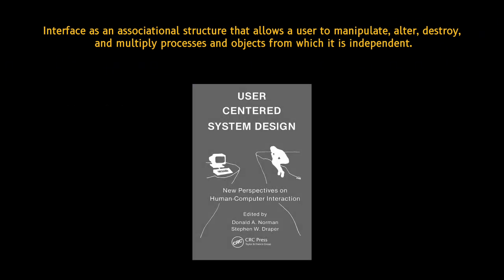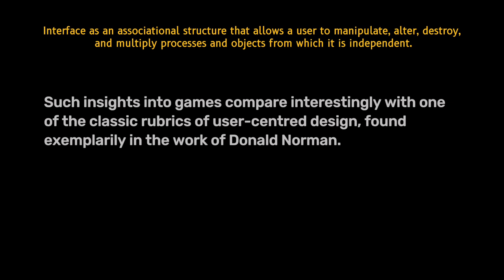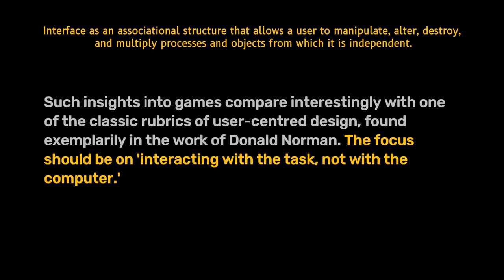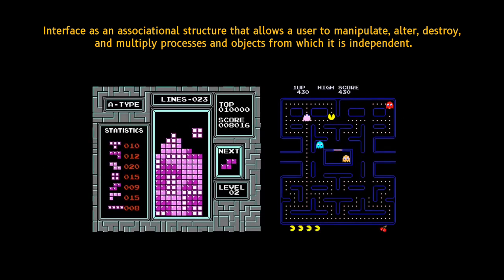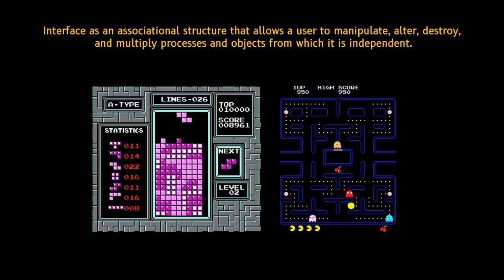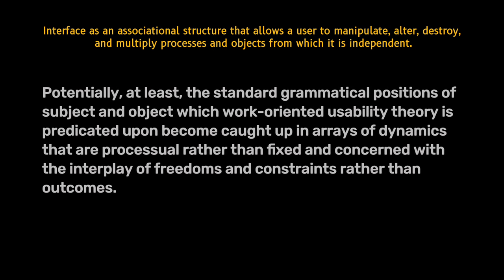Comparing this to user-centered design as exemplified by Don Norman, we see a contrast. Such insights into games compare interestingly with one of the classic rubrics of user-centered design: the focus should be on interacting with the task, not with the computer. In a video game, the task is precisely to perform the interaction with the computer, for as long as it remains pleasurable or compulsive. This blurs the traditional boundaries of subject — the user — and object — the task — introducing a dynamic that focuses on the interplay of freedoms and constraints rather than fixed outcomes.